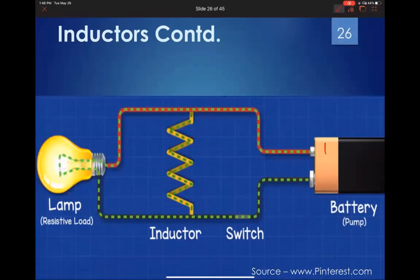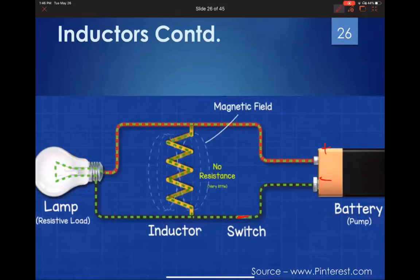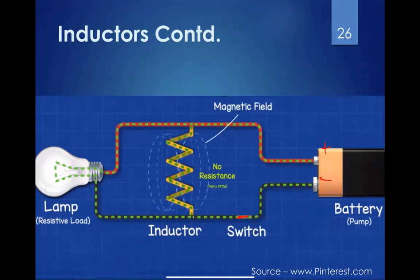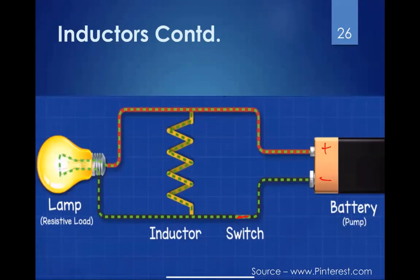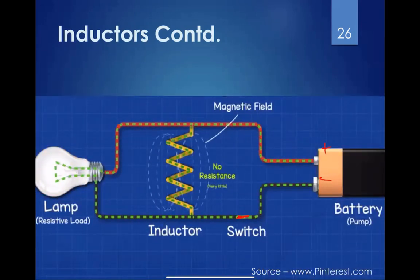In a circuit with a battery, switch, inductor, and lamp: when power is first supplied, the lamp does not light up immediately. This is because the inductor initially has high resistance. Over time, the resistance of the inductor gradually reduces and current begins to flow through the lamp, lighting it up.